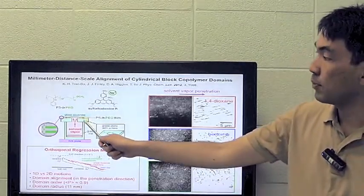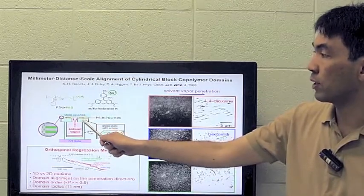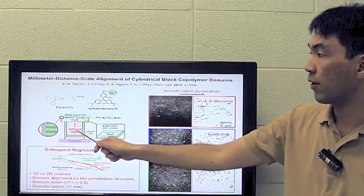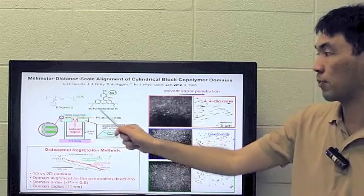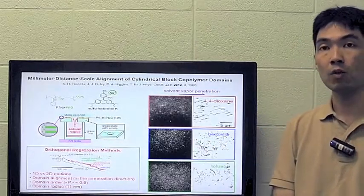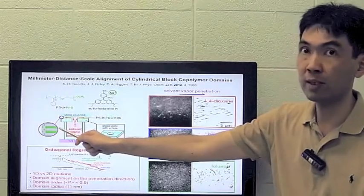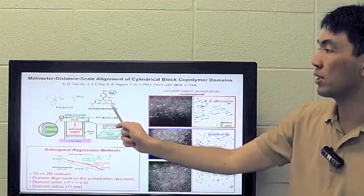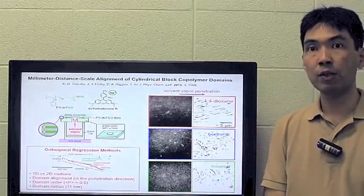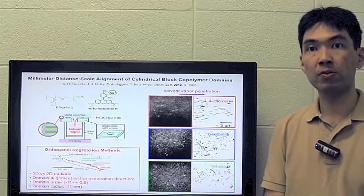We could visualize the structure of cylinder-shaped PEO domains by tracking the motion of these dye molecules that preferentially partitioned to the PEO domains. We found 1,4-dioxane vapors could induce domain alignment in the direction of solvent vapor penetration,